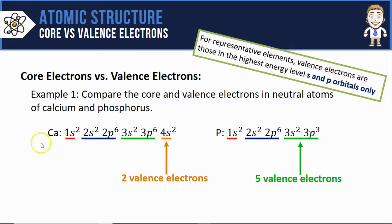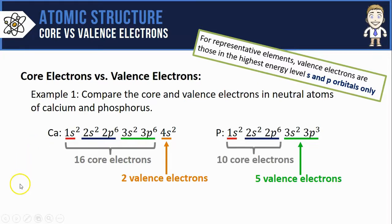Once you've got the valence figured out, the rest is pretty easy because the core electrons are simply everything else. So it's 16 core electrons in calcium and 10 core electrons in phosphorus.